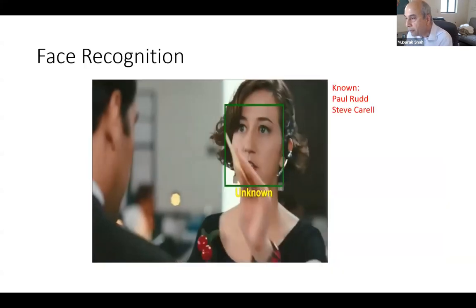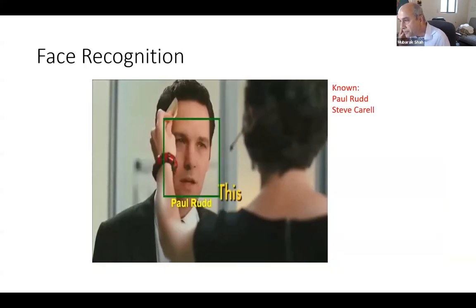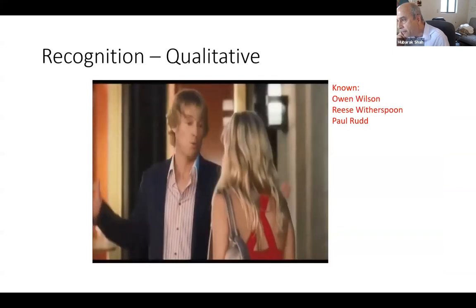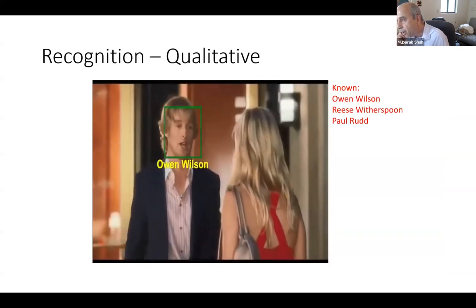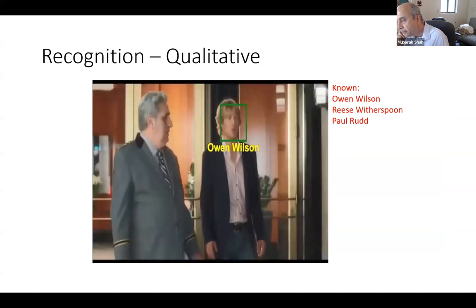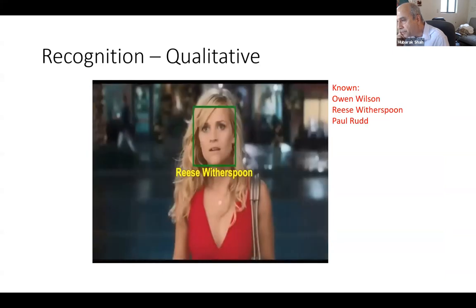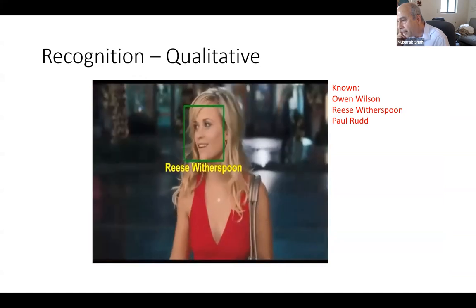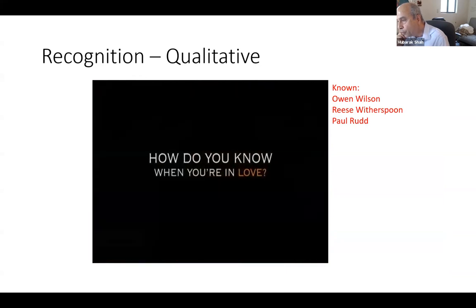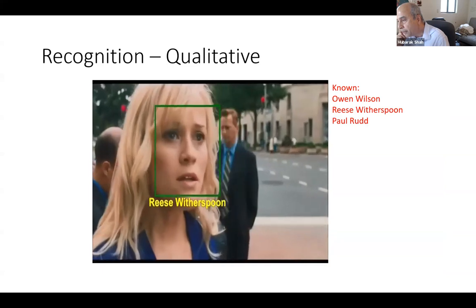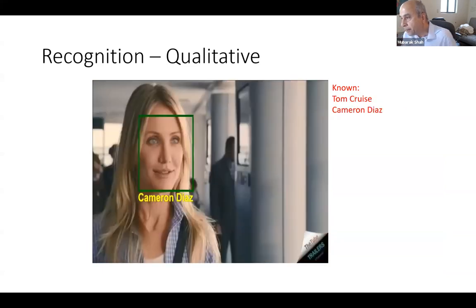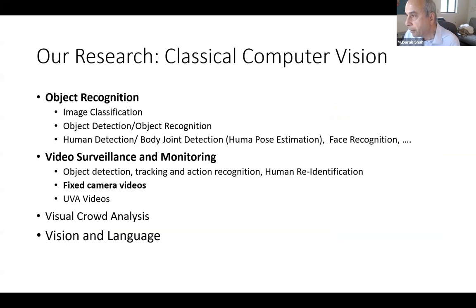We can also recognize faces. We have a database of actors from movie trailers. The idea is to take a face and recognize which actor it is. If that person is not in the database, we say 'unknown.' That's an important application of biometrics.